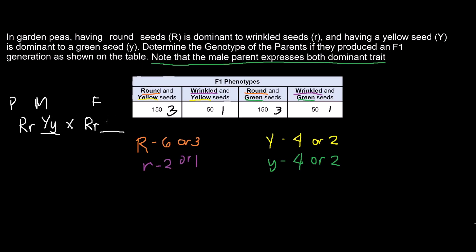So we would put heterozygous for the male parent and the homozygous recessive for the female parent. And now, we've successfully determined the genotype of the parents from offspring ratios.